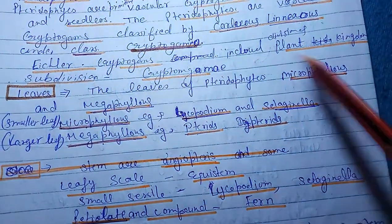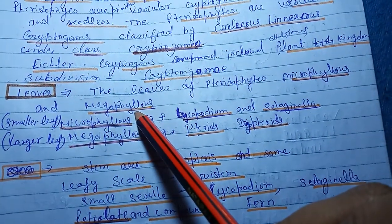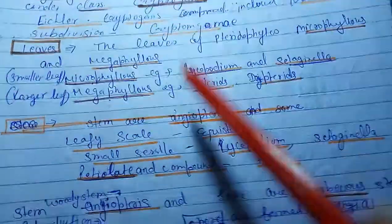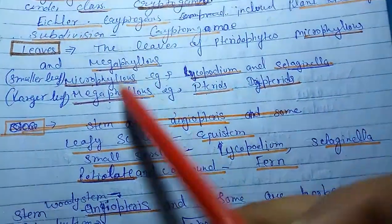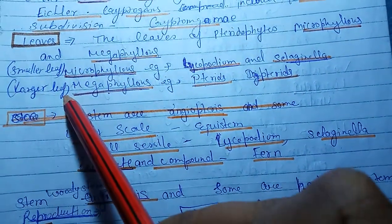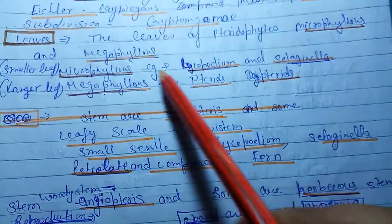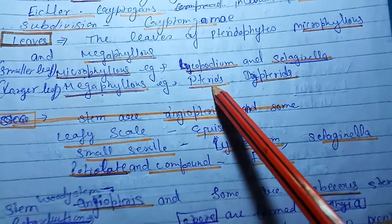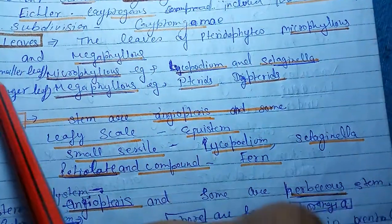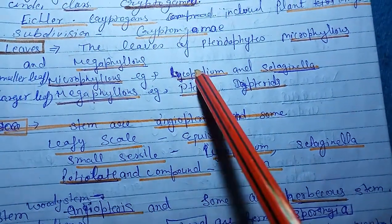Leaves are mega and microphylls - small leaf and larger leaf arrangement in pteridophytes. Micro means a small leaf and larger leaf is megaphyllus.